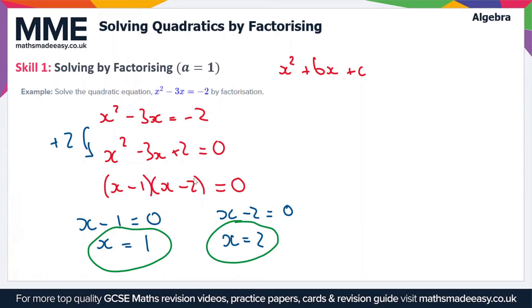The trick here is to spot that whatever is in the brackets, the solutions will be the opposite. So if you have minus 1 and minus 2 in the brackets, the solutions are going to be 1 and 2. But note this is only the case when a equals 1.